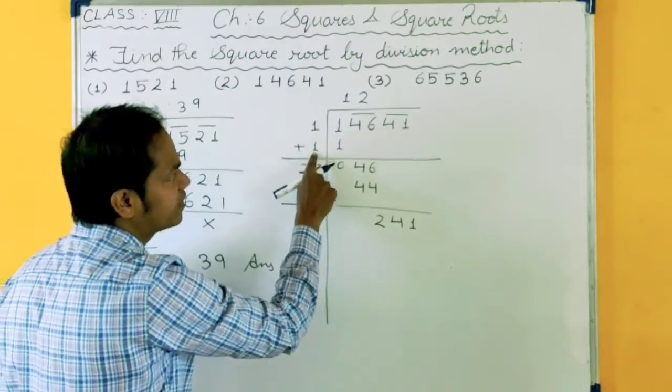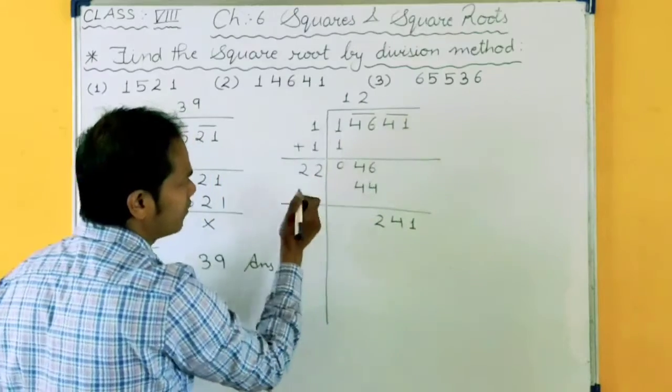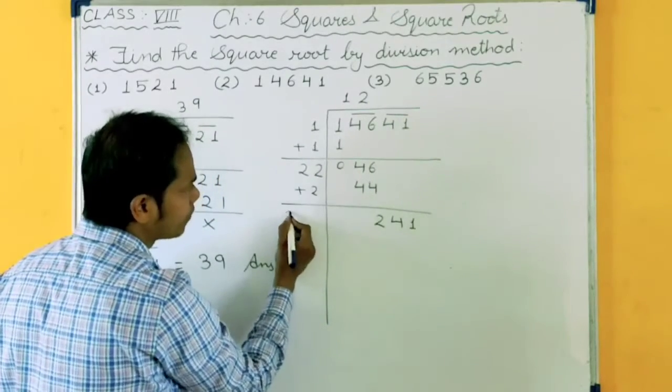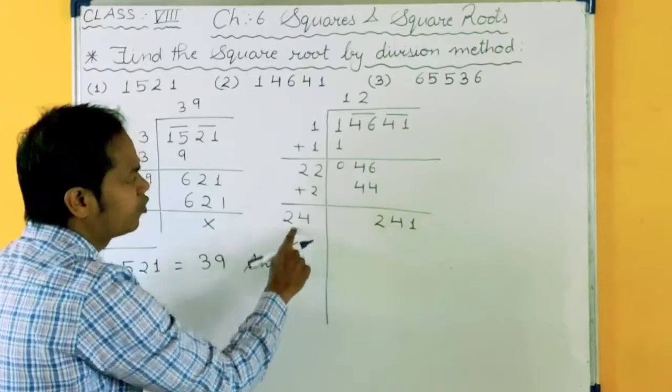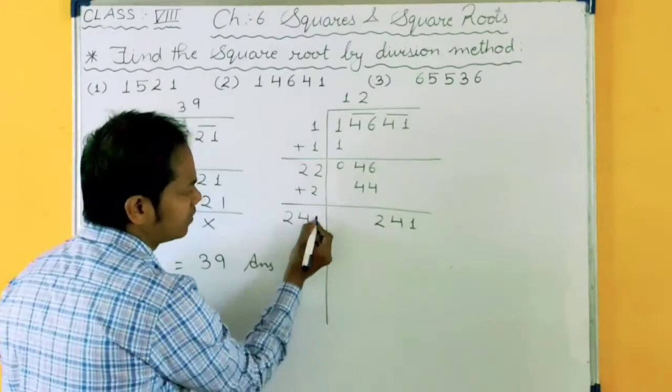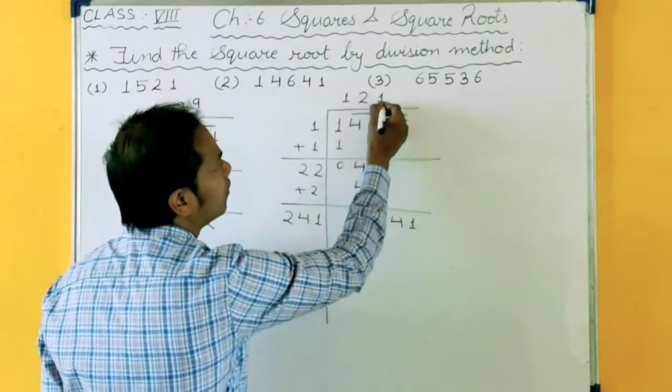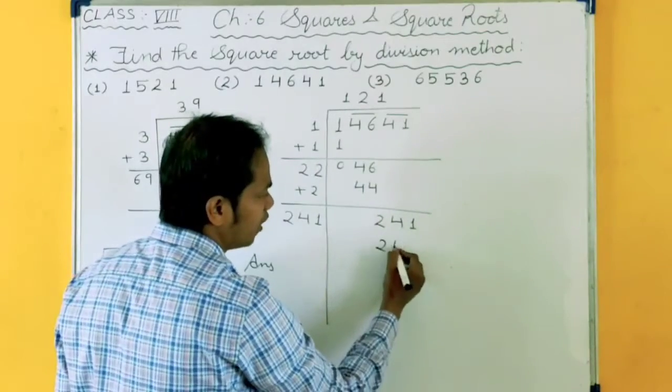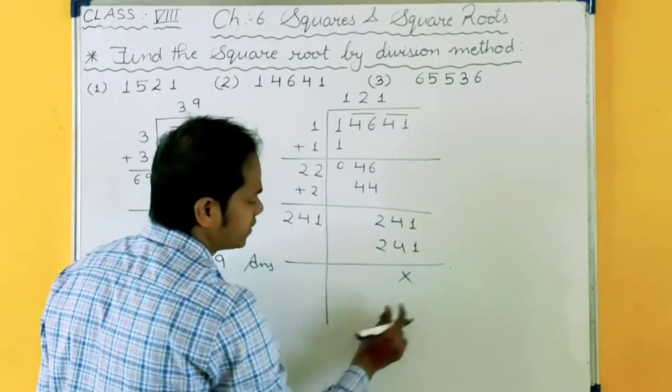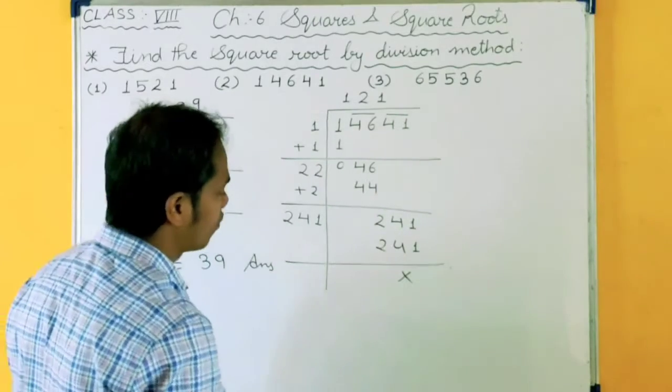First we have taken 1. When we have added this, then we have taken 2. Then we will add 2 also. 24. 2 plus 2 is 4, and 2. Now again we want 1, so I will take 1. Because I know that 241 times 1 is 241. Now we are getting remainder 0.